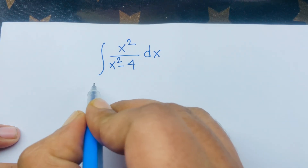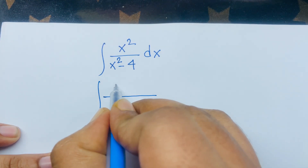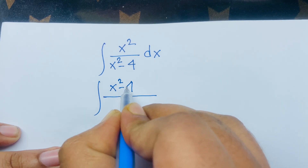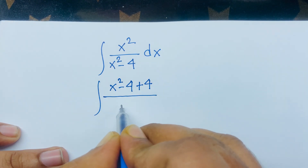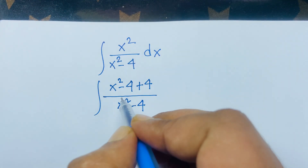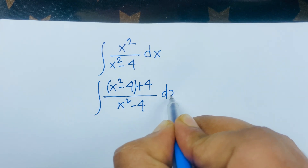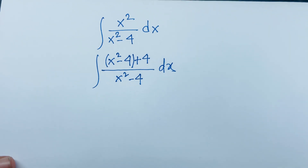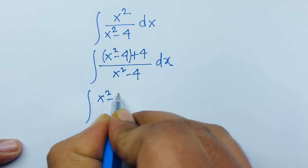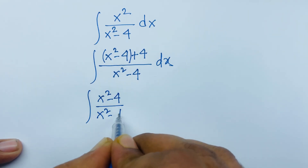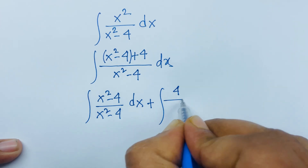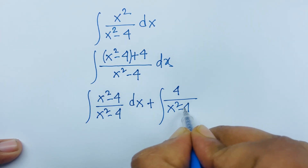First of all, we write the integral of x squared over x squared minus 4. We rewrite the numerator x squared as x squared minus 4 plus 4, all over x squared minus 4. This splits into the integral of (x squared minus 4)/(x squared minus 4) dx plus the integral of 4/(x squared minus 4) dx.